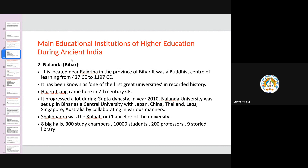Infrastructure-wise, it was very properly constructed. There were eight big halls called Samagraha, and 300 study chambers or theater-like structures. According to Xuanzang's diary, around 10,000 students and 200 professors were at Nalanda University, giving a notable student-to-teacher ratio. The university also had a nine-storied library with an observatory tower for astronomical research.